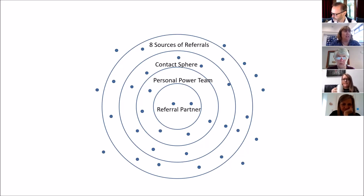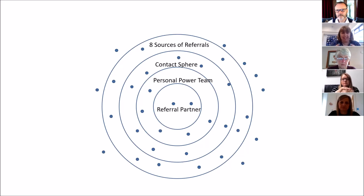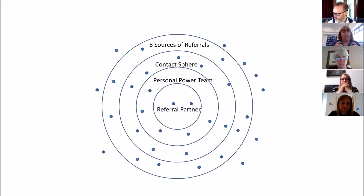Your best referral source is what we call the contact sphere: people who complement but don't compete with you and are looking for the same target market. You create a symbiotic relationship because you're both looking for the same types of clients without competing. From that contact sphere, you identify people to bring into your personal power team — where you start creating strategies around finding referrals for each other, sharing social media, going to events together, doing things together.